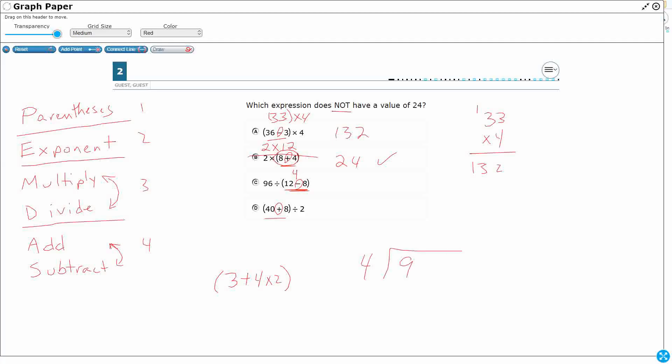Probably going to be 24. Let's see. Four goes into nine twice. Eight. Yes. OK. So there we go. All right. So that's also 24, which means I don't want it.